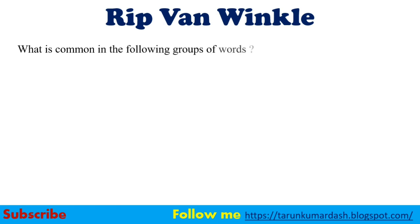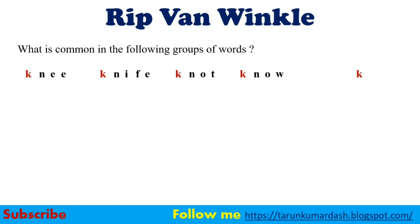What is common in the following groups of words? K-N-E-E — knee. K-N-I-F-E — knife. K-N-O-T — knot. K-N-O-W — know. Here we can find out the similarity that we are not pronouncing the letter K. So K remains silent. We are pronouncing knee, knife, knot and know. So the common silent letter here is K.